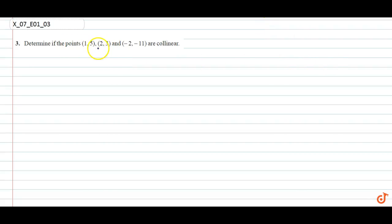We have to determine whether these points are collinear or not. So let's say these are points on the vertices of triangle ABC: A(1,5), B(2,3), C(-2,-11). The distance...